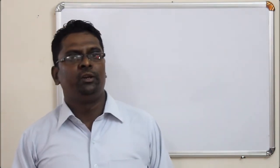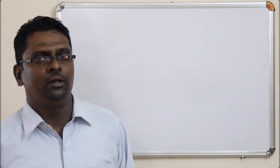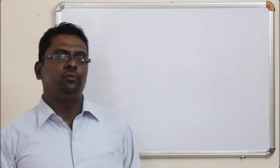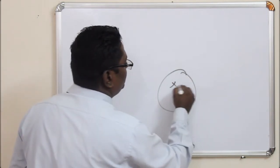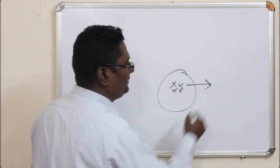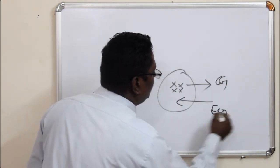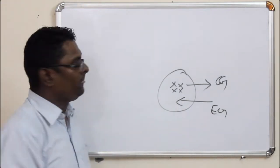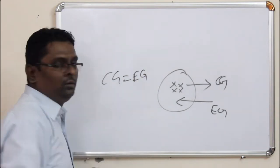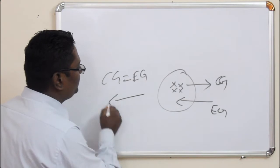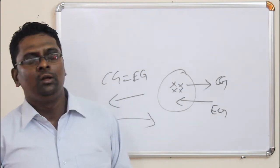Nernst Potential is that membrane potential across the cell membrane at which the concentration gradient for a particular ion is equal to the electrical gradient for that particular ion, but in opposite direction. So, for example, the concentration gradient for ion X is towards outside, and the electrical gradient is towards inside — equal in magnitude but opposite in direction. This is called the Nernst Potential or Equilibrium Potential.